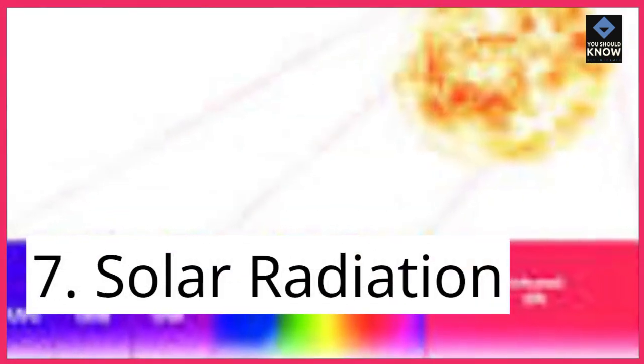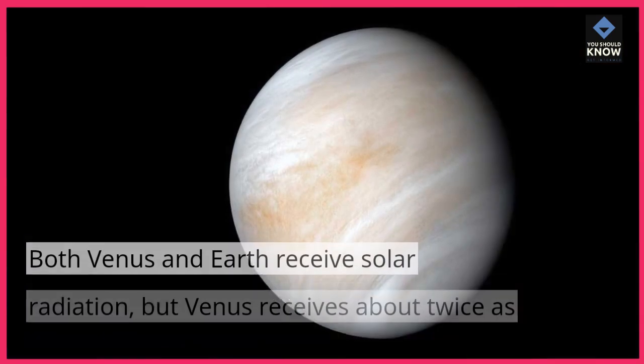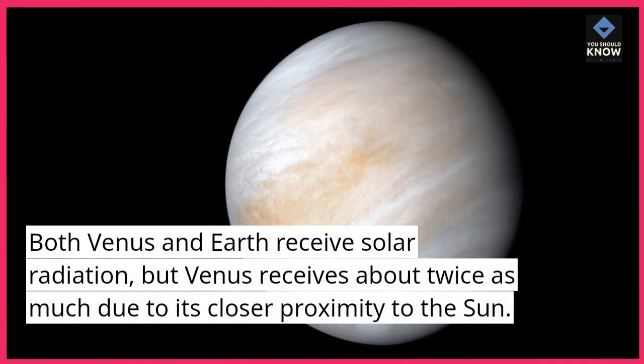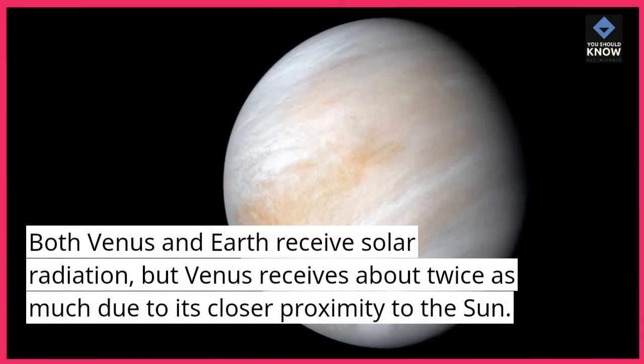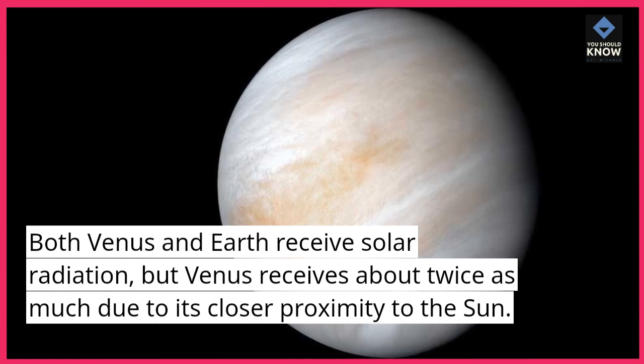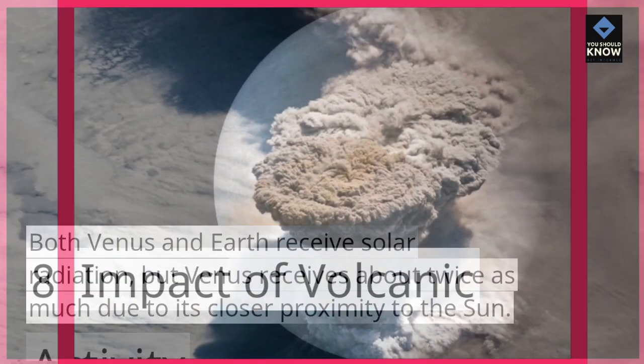7. Solar Radiation: Both Venus and Earth receive solar radiation, but Venus receives about twice as much due to its closer proximity to the Sun.